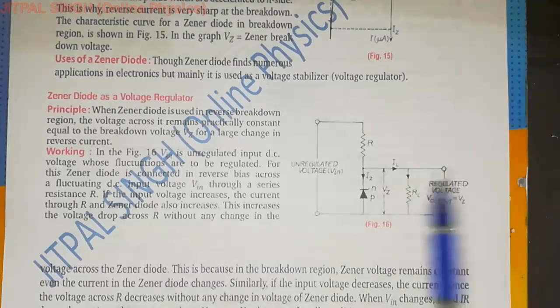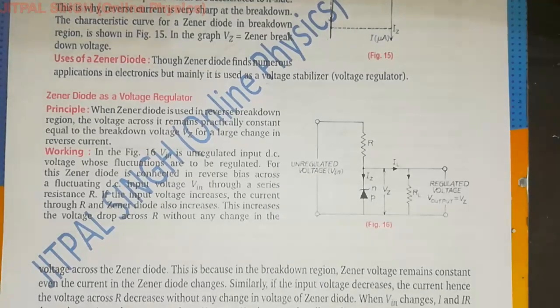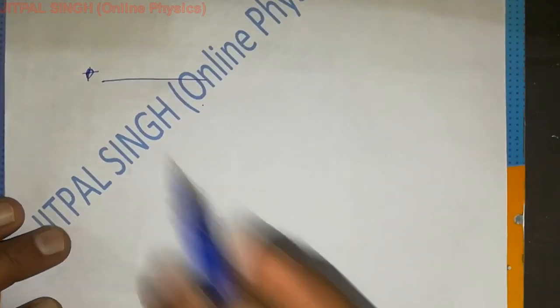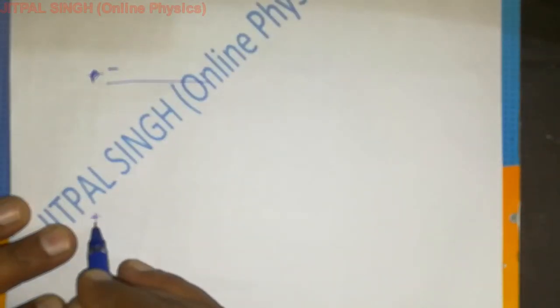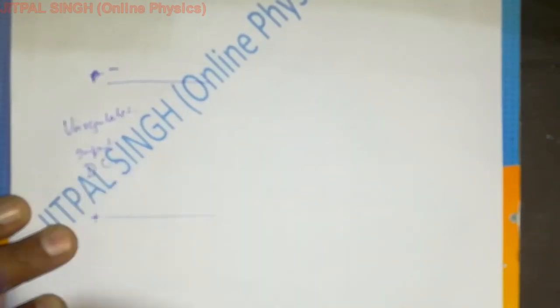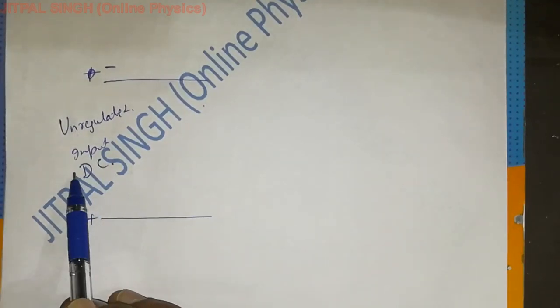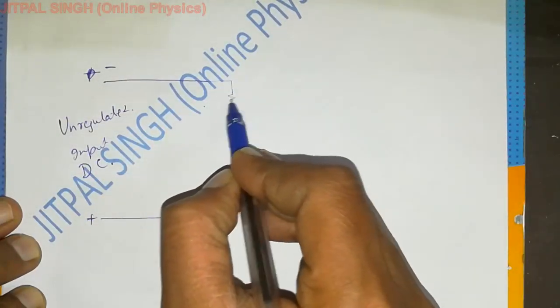Okay, now here we take unregulated voltage. Let me give the explanation on separate page first. Suppose I have a DC output which is not regulated. Fluctuations. I will write unregulated input DC. This is unregulated. It is always less and it is always more and less. What have I done? We have received one resistance.